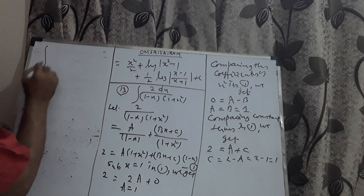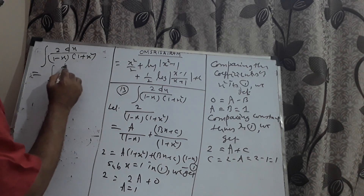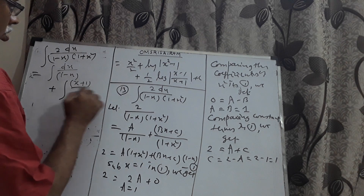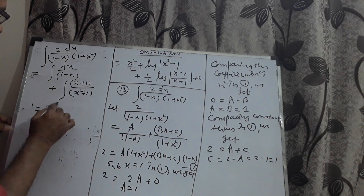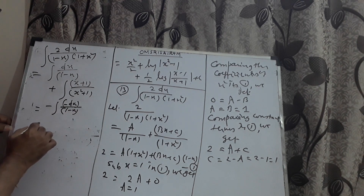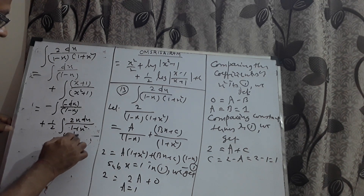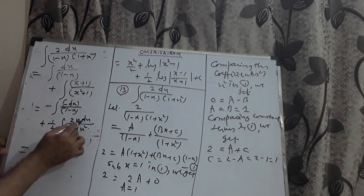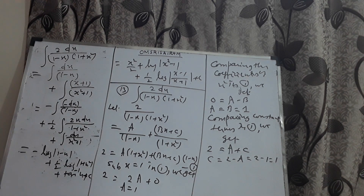The whole integral ∫2 dx / [(1 - x)(1 + x²)] becomes ∫dx/(1 - x) + ∫(x + 1)/(x² + 1) dx. The derivative of (1 - x) is -1, so we multiply and divide by -1 to form dt/t, giving -log|1 - x|. For ∫x/(x² + 1) dx, multiply and divide by 2 to get the form du/u, giving (1/2) log|1 + x²|. Finally, ∫dx/(x² + 1) = tan⁻¹x. The final answer is -log|1 - x| + (1/2) log|1 + x²| + tan⁻¹x + c.